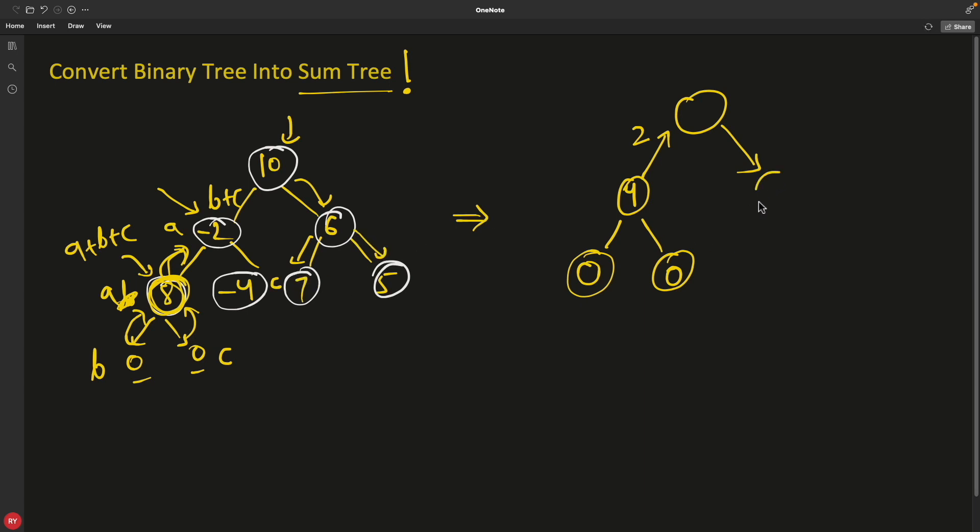From here, you will make, I'll keep this also empty. This will be 0 and this is also going to be 0 because this 7 also don't have anything in the left and right. So 0 plus 0 is 0. You will store 0 inside this and you will send back 7 plus 0 plus 0. So which is 7.